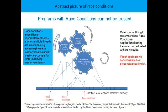A simple truth is that programs with race conditions cannot be trusted. A race condition is a condition of unpredictable results. It is when multiple threads are accessing the same memory location simultaneously — more precisely, when we do not know which thread will get there first, and when at least one access is modifying memory contents, i.e., access for write.